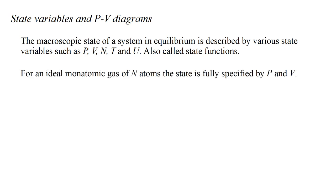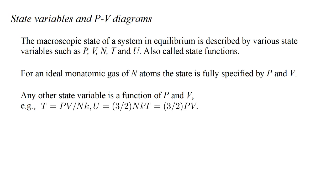For an ideal monatomic gas of N atoms, the state is fully specified by pressure and volume alone. This is because any other state variable can be expressed as a function of P and V. For example, the ideal gas law tells us that temperature equals PV over NK, and likewise for other state variables.